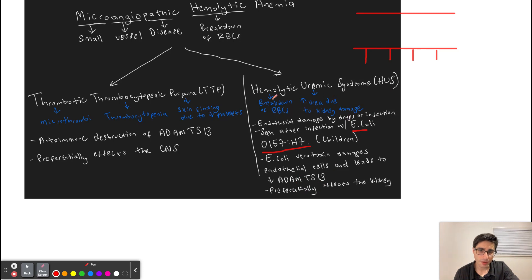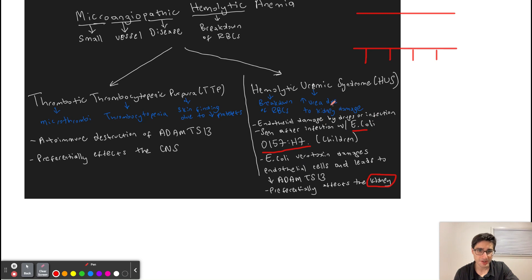One important thing to know about hemolytic uremic syndrome is that it preferentially affects the kidneys — this is one key difference from TTP. The name gives it away: hemolytic refers to breakdown of blood cells, and uremic means there is an increase in urea in the blood due to kidney damage. The endothelial damage is occurring in the kidney, so tissues in the kidney get damaged, causing an increase in urea — that is where the uremic comes from in the name of the disease.